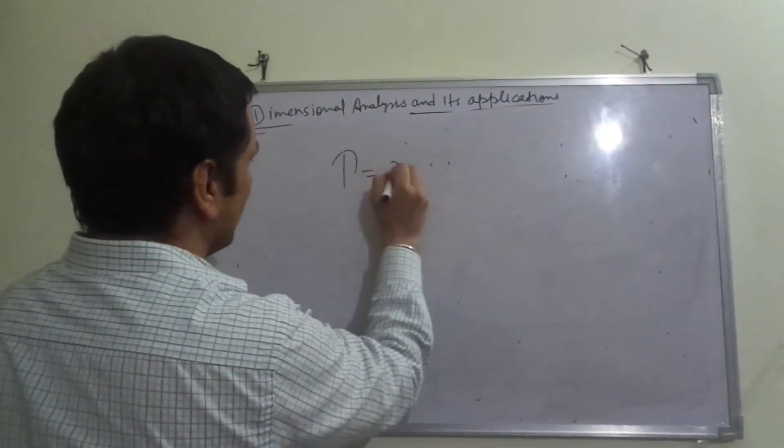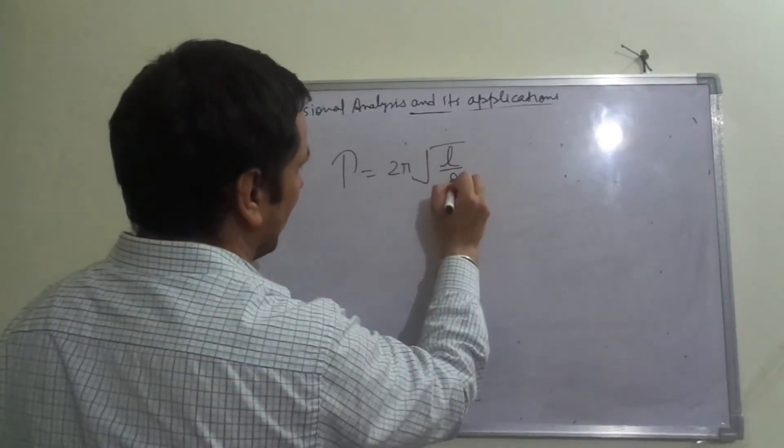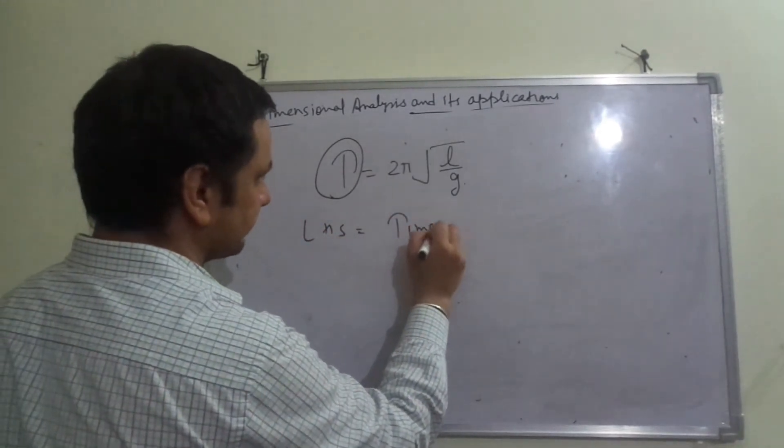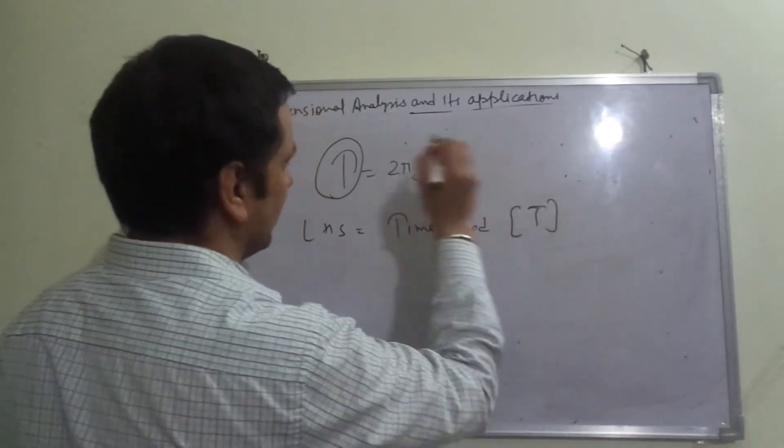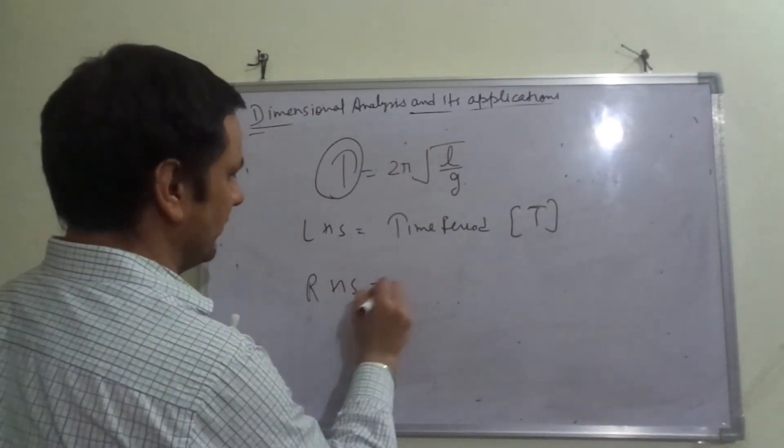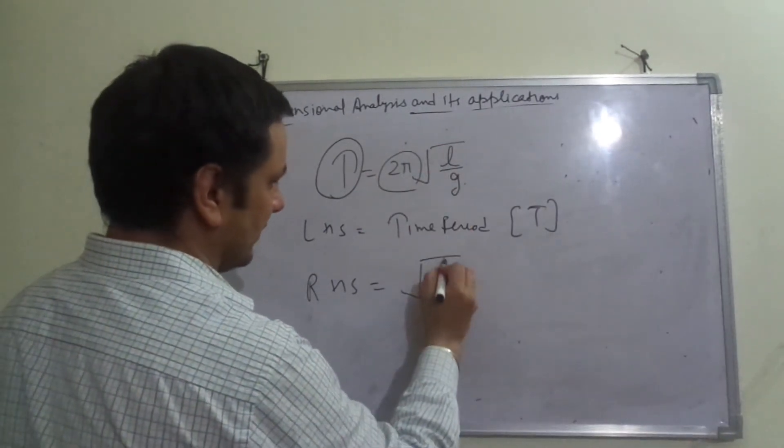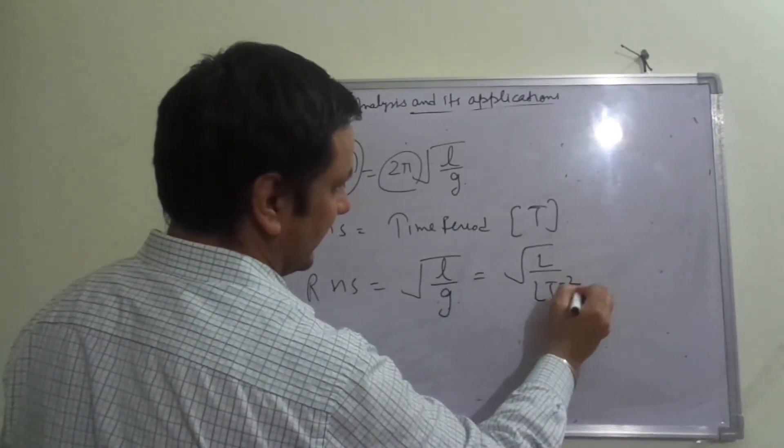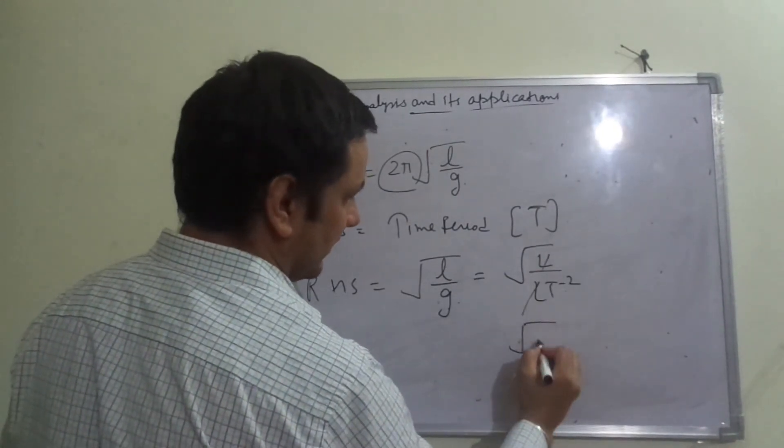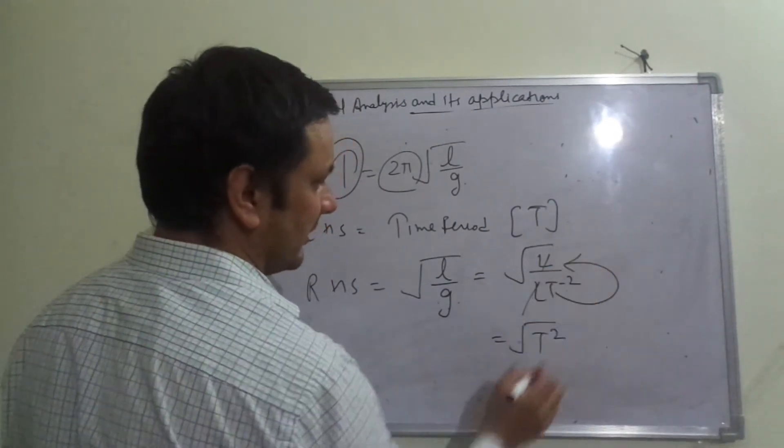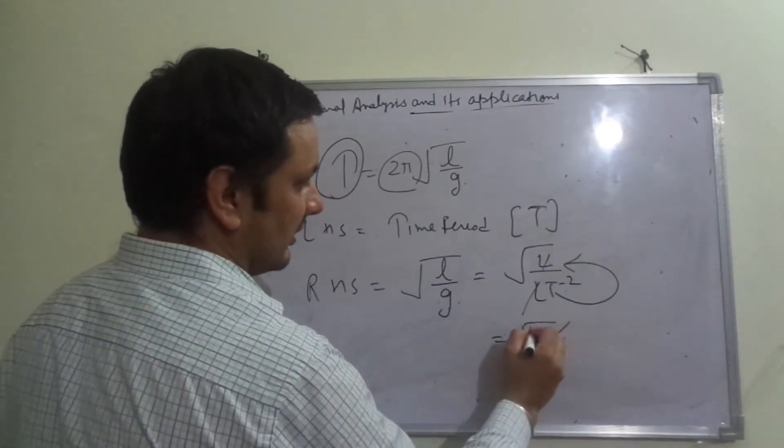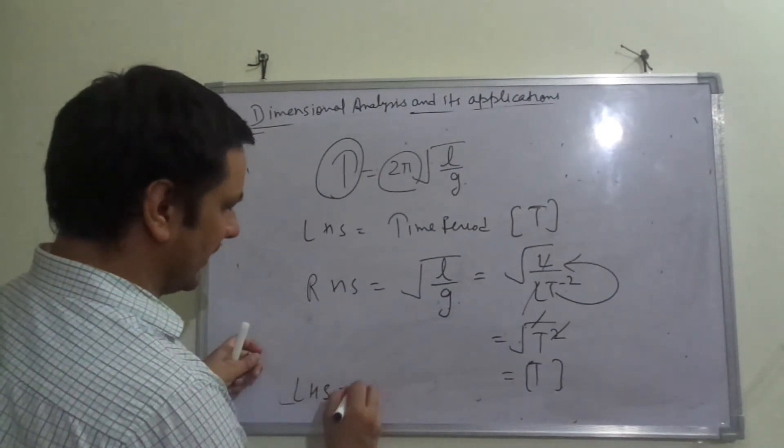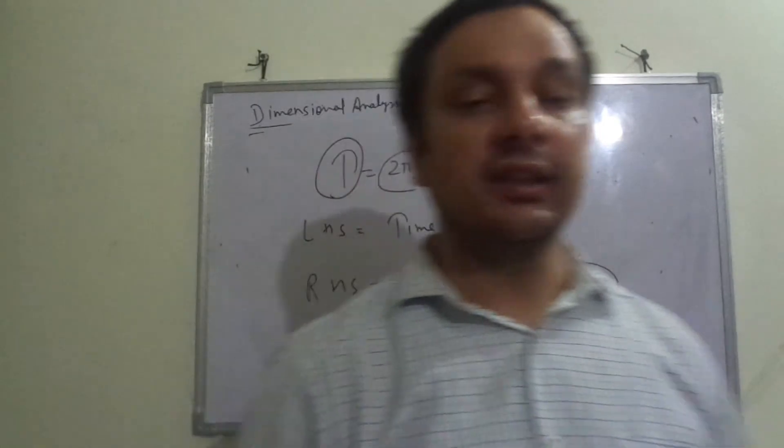One more example: T = 2π√(l/g). Here right hand side 2π will not be considered, it's a constant. Now l upon g - length divided by g which is LT⁻². It comes out to be T². Converting from denominator, powers add. Under root and square cancel, we're left with T. Left hand side equals right hand side, so this is also dimensionally correct.